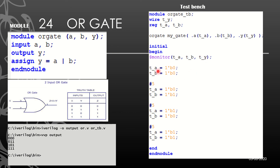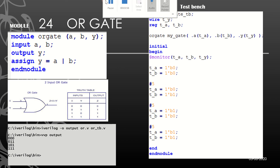Now for the test cases: t_A and t_B start at 0,0 (binary zero zero). After five nanoseconds delay we apply 0,1; after another five nanoseconds 1,0; and finally 1,1. The expected outputs are: 0-0 gives 0, 0-1 gives 1, 1-0 gives 1, and 1-1 gives 1. So other than the first case, the remaining three must give us 1. Let's go ahead and see the demo.